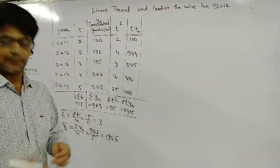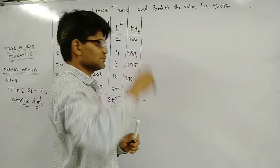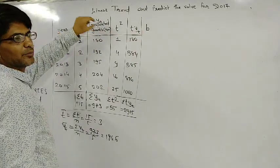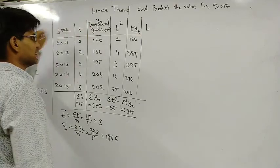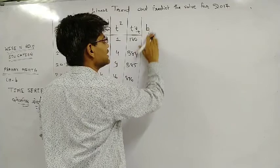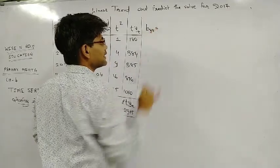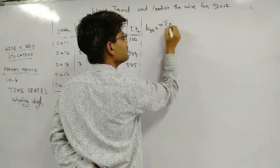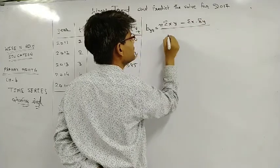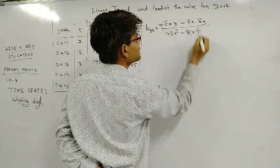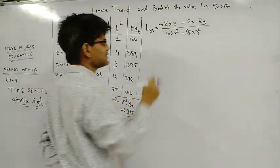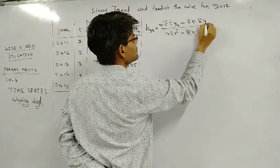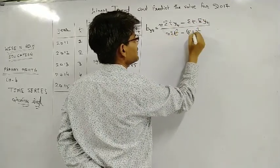Now we have both bar values. As we did in linear regression, the same way we find b here. The formula was: b = (n × Sigma XY − Sigma X × Sigma Y) / (n × Sigma X-squared − (Sigma X) whole square). Now I replace the independent variable X with T, and XY with YT throughout the formula.